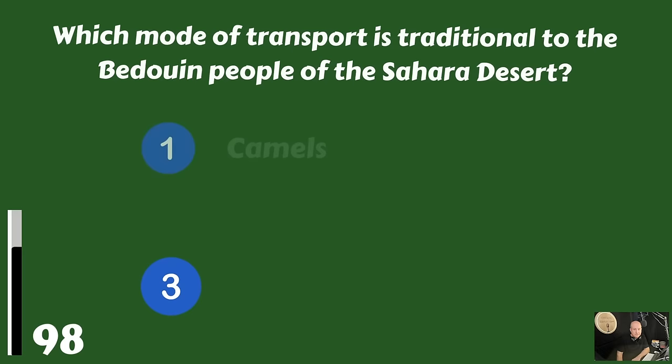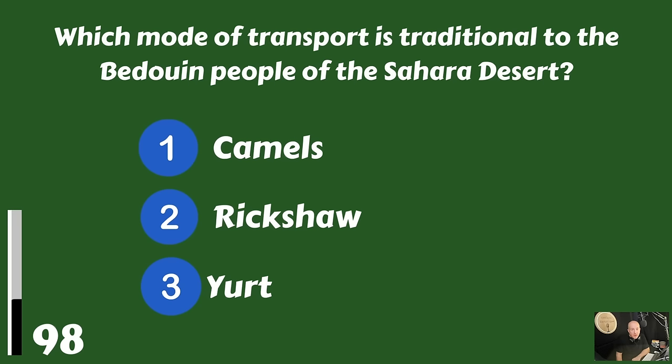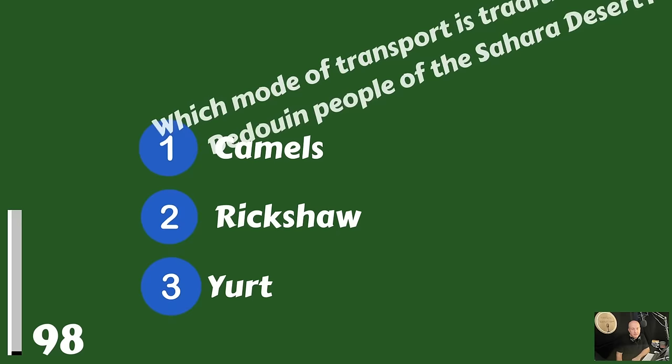Which mode of transport is traditional to the Bedouin people of the Sahara Desert? Camels, the rickshaw, or the yurt? The mode of transportation is camels.